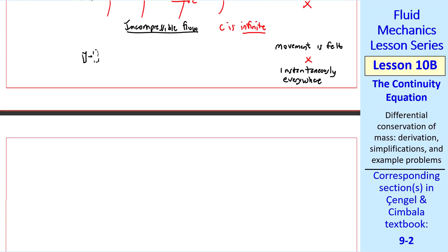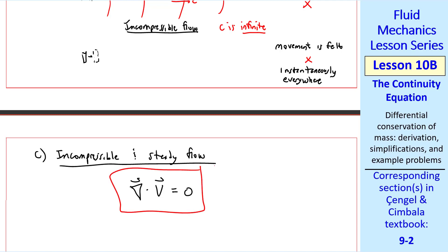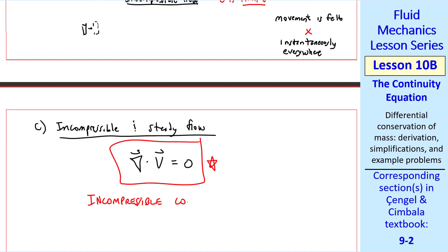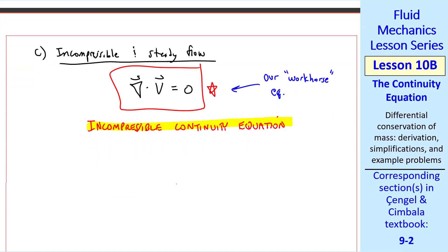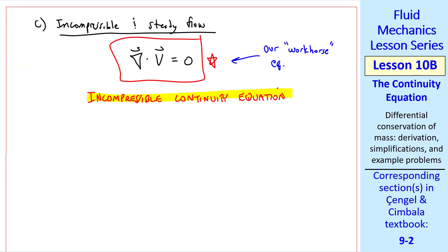Finally, we can have both incompressible and steady flow, but the equation is the same as that for incompressible unsteady flow, namely del dot v equals zero. We'll call this the incompressible continuity equation. This will be our workhorse equation for almost everything we do from here on in this course. Before I do some examples, I'll write it out in Cartesian and cylindrical coordinates. In Cartesian coordinates, x, y, z, and u, v, w, our workhorse equation becomes del u del x plus del v del y plus del w del z equals zero.